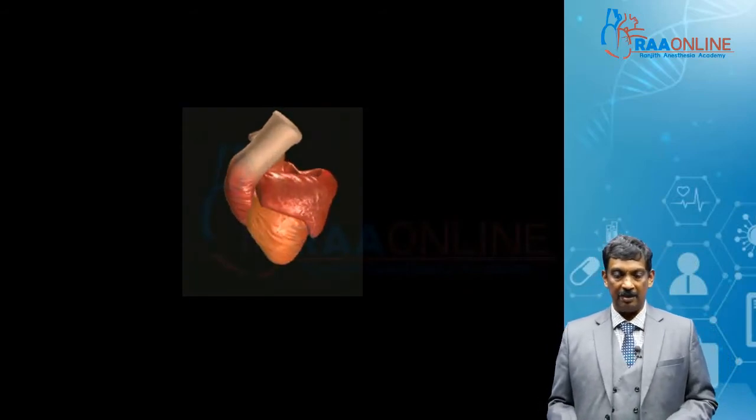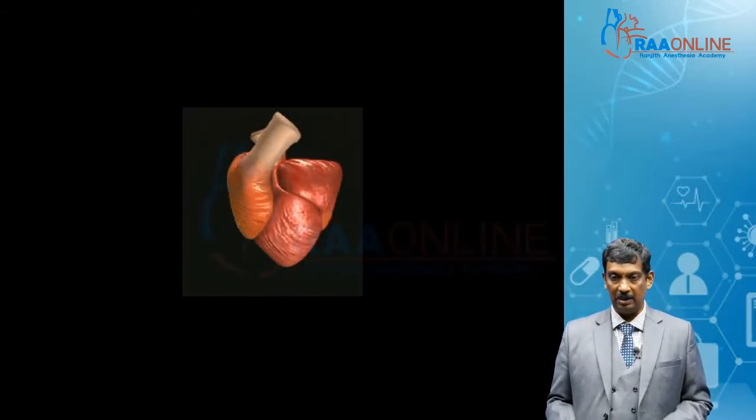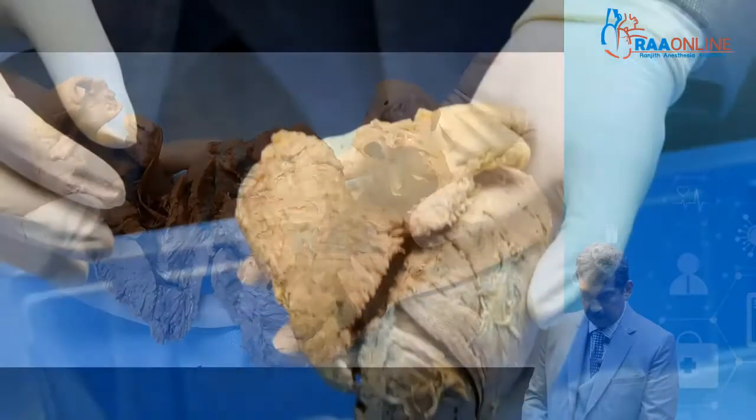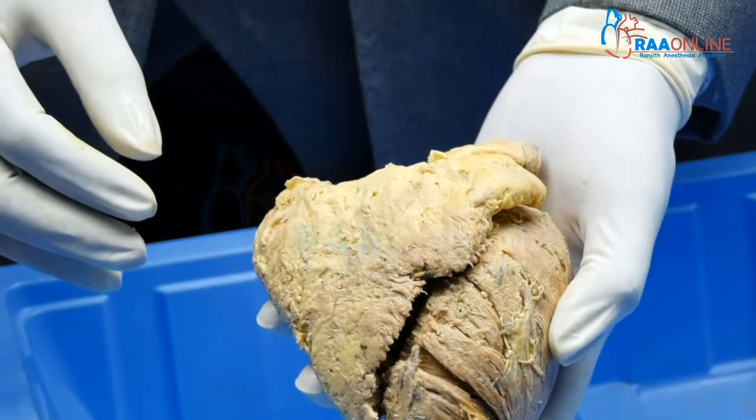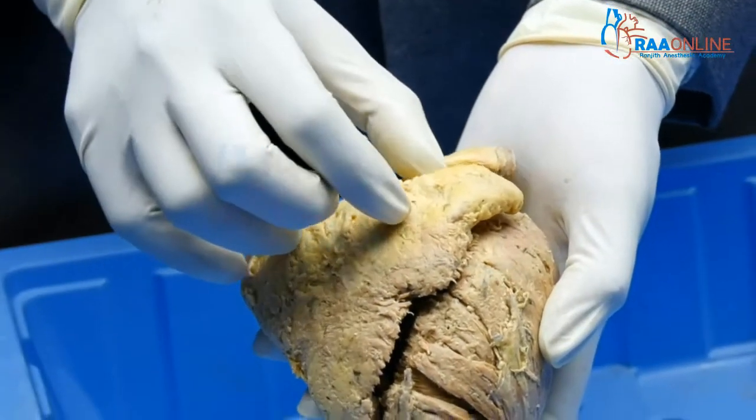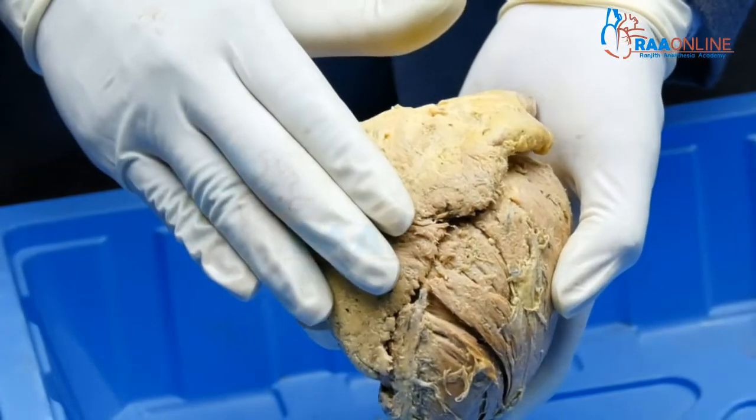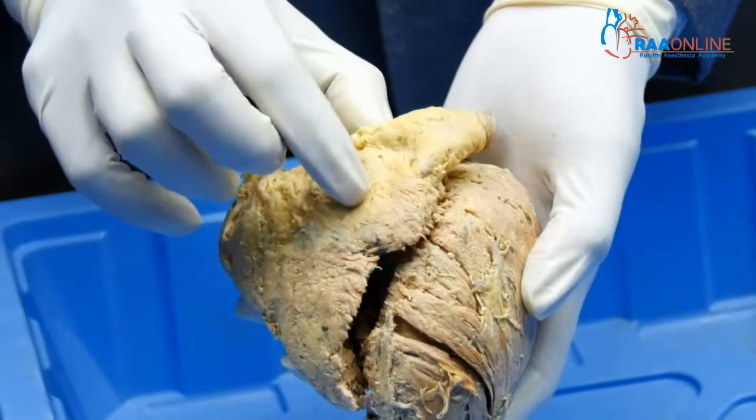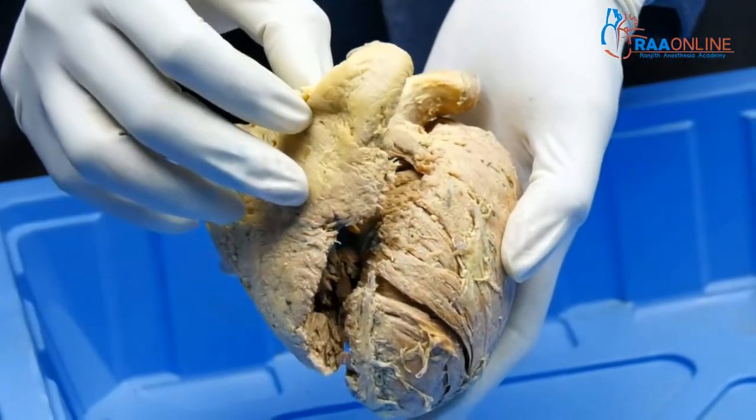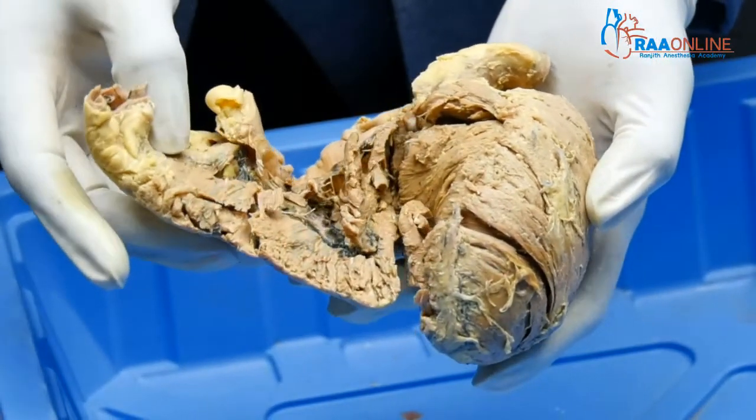This is an animation showing systole and diastole in all these rope-like structures. This is our attempt at what Dr. Guasp had done. This is the right ventricle, this is the left ventricle, and the pulmonary artery with the pulmonary valve as we are opening it out.